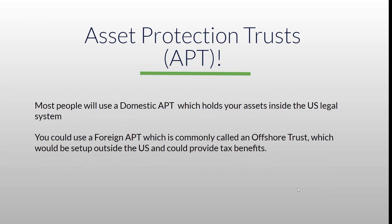Most people will use a domestic asset protection trust, or domestic APT, which holds all your assets inside the U.S. under the U.S. legal system. If you don't want that, you'd be looking at a foreign APT — commonly called an offshore trust. These are going to be way more expensive, but they're set up outside the U.S., so you could have tax benefits, protection benefits, privacy benefits, and a plethora of other benefits.